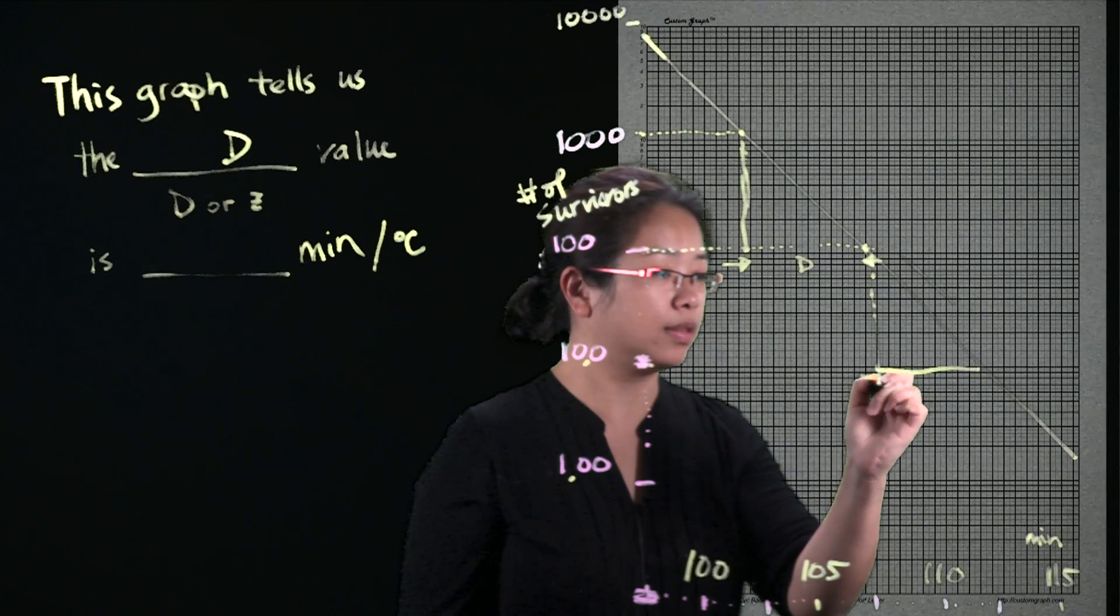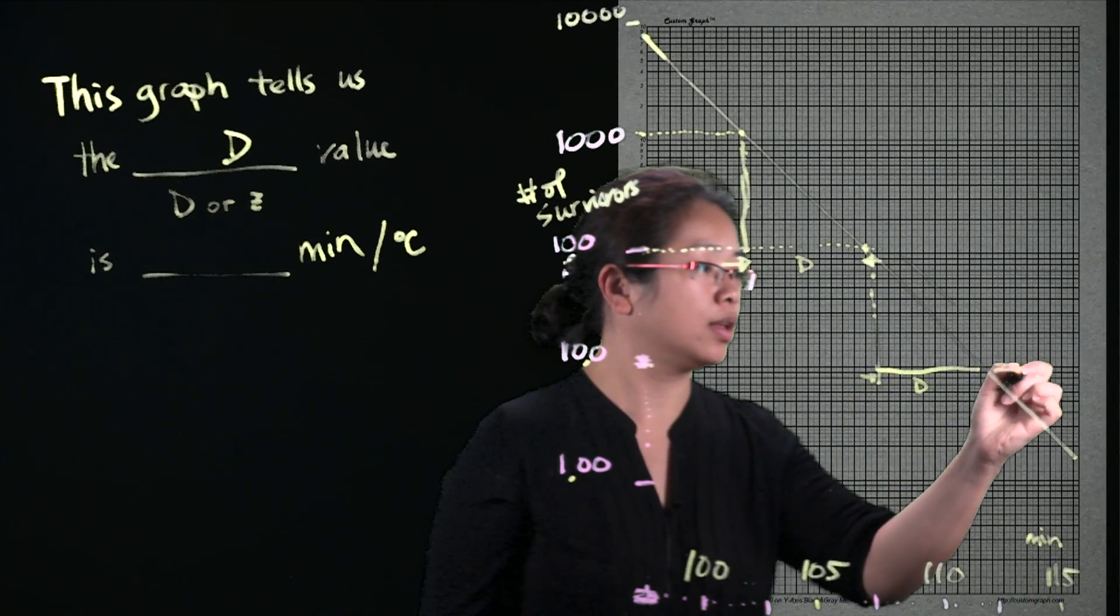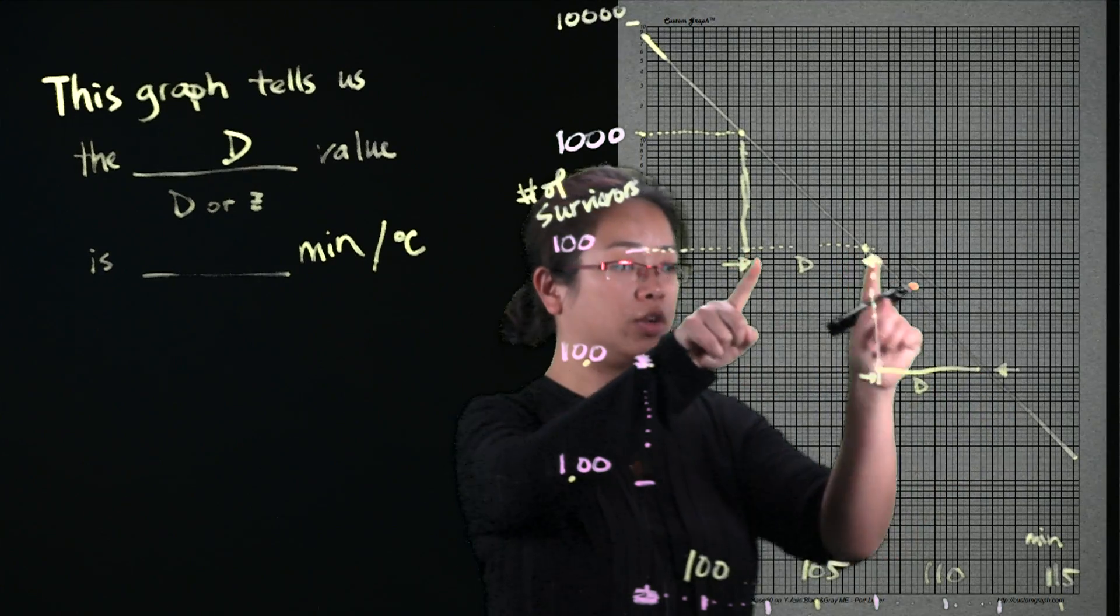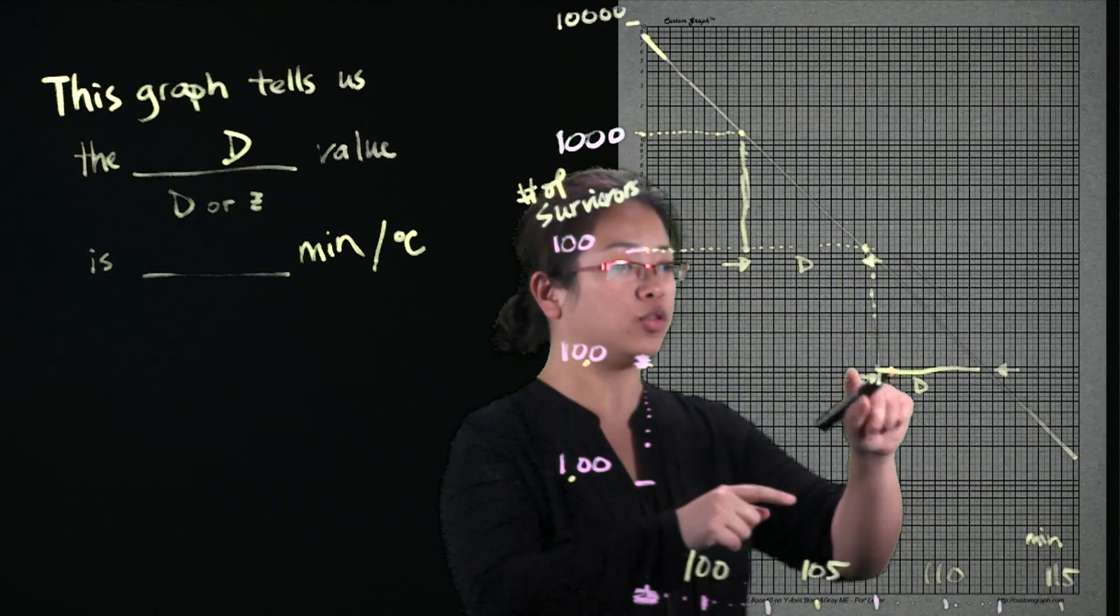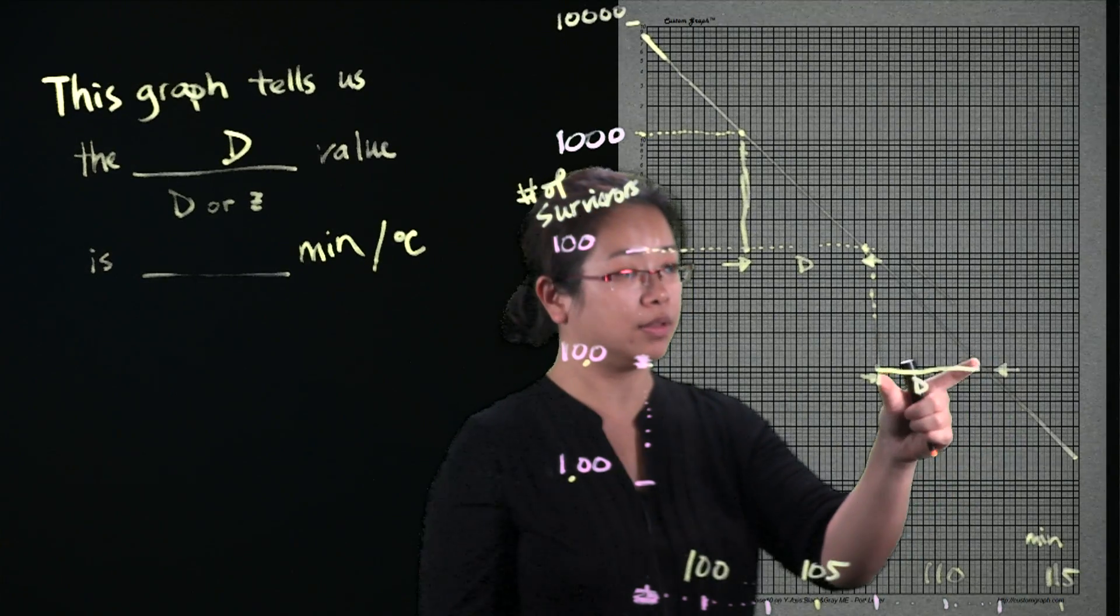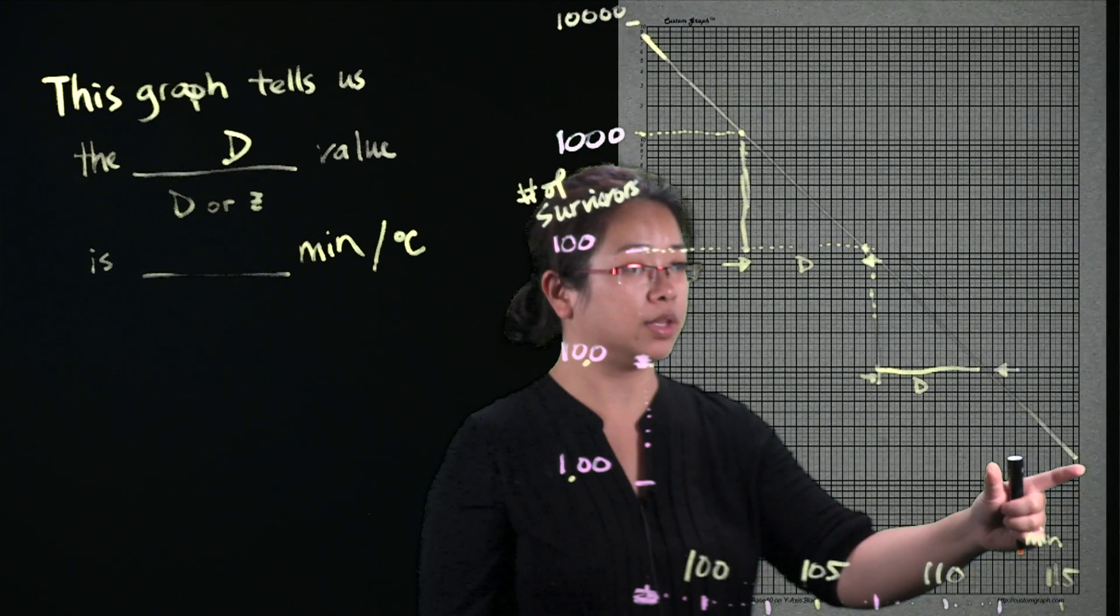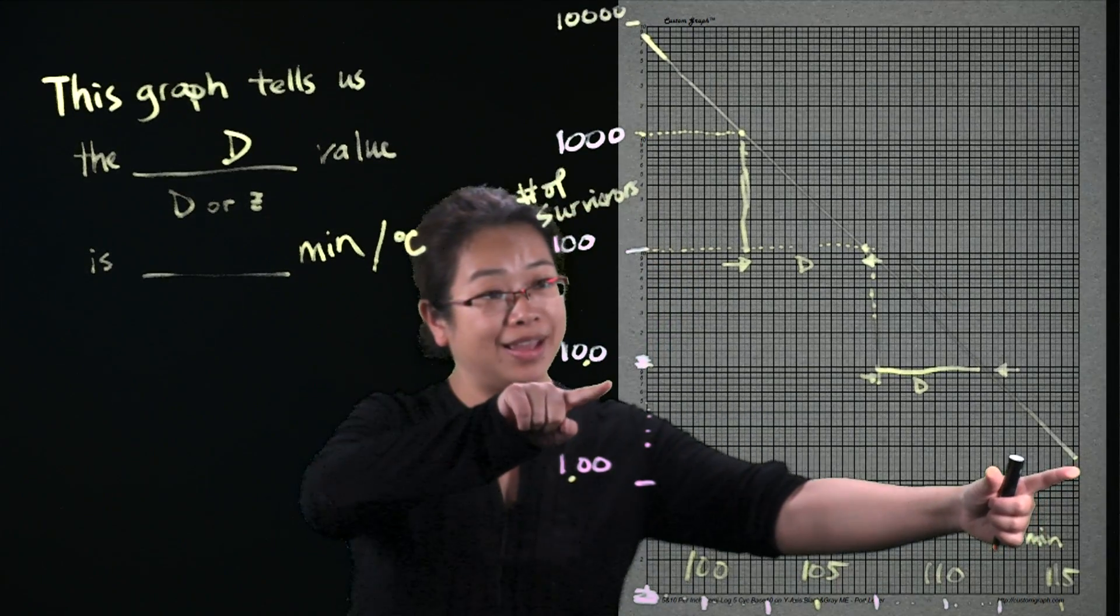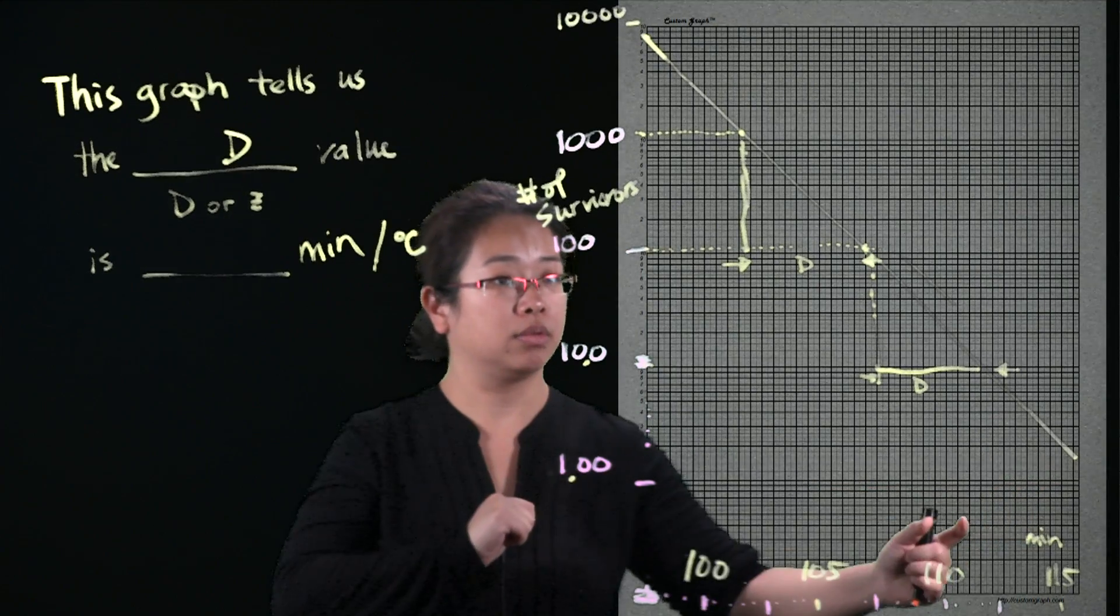So then this here, this D, this D here will be the same D here. It really doesn't matter where you draw your starting point or your end point. Likewise, it will be this D here will be the same D that we are going to construct comparing it from 10 to 1.